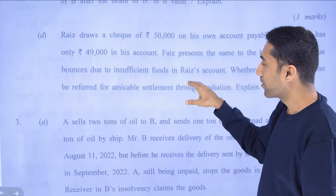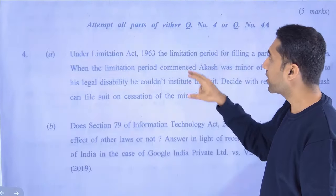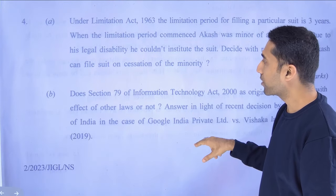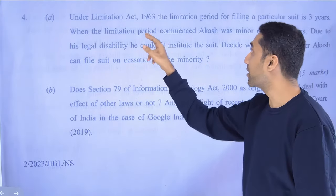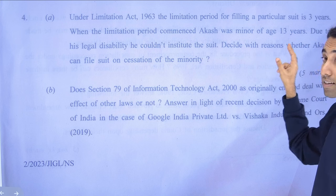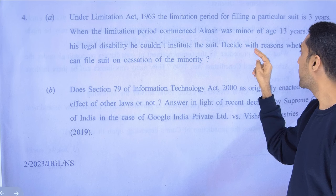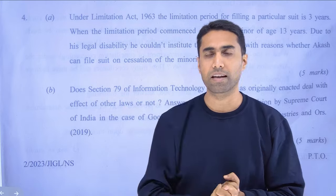There are also a few more case law and scenario questions. For example, in question 4, they give you a certain circumstance: under the Limitation Act, the limitation period for filing a particular suit is 3 years. When the limitation period commenced, Akash was a minor — 13 years old. Due to legal disability he could not institute the suit. Decide with reasons whether Akash can file the suit on cessation of minority. It is actually a direct question presented in the form of a scenario.